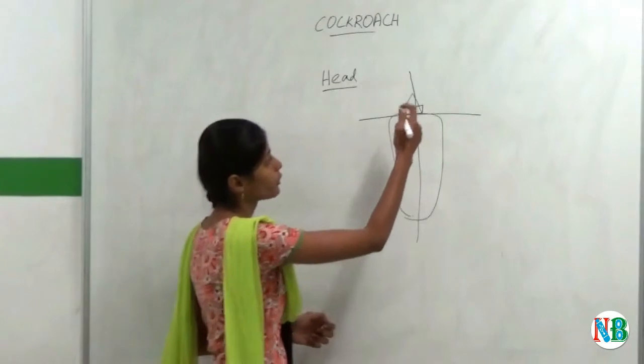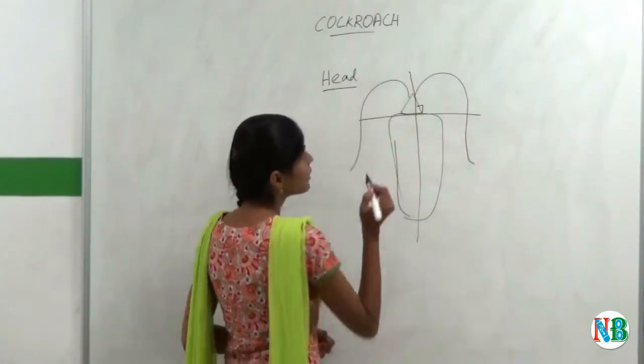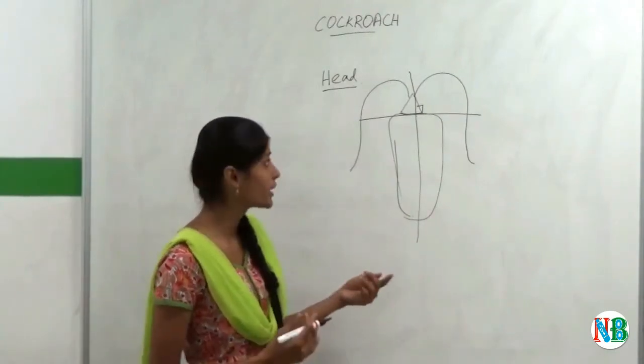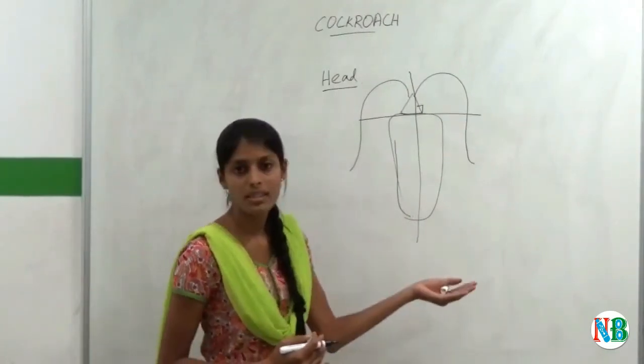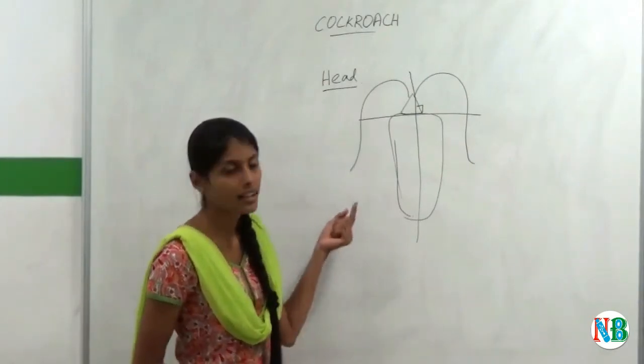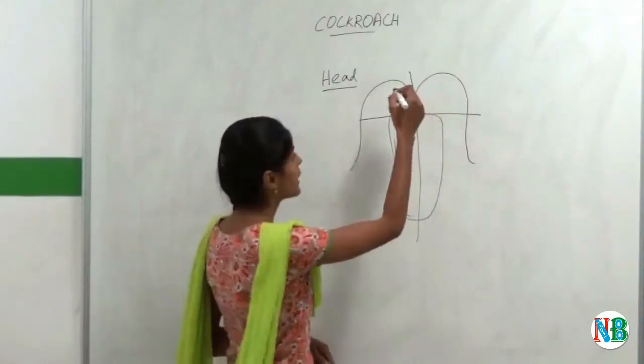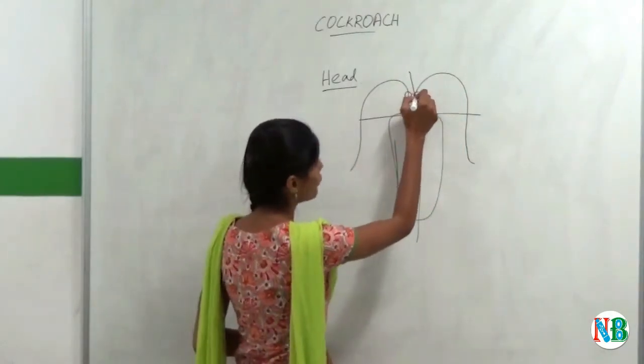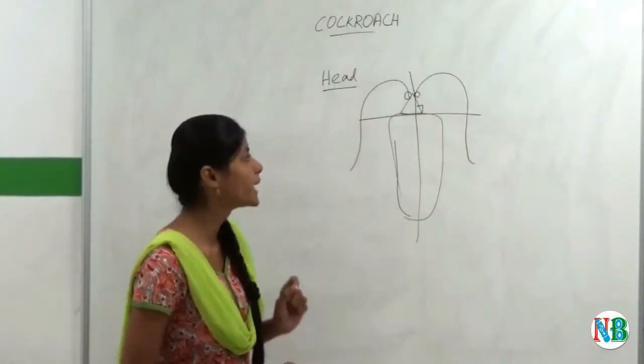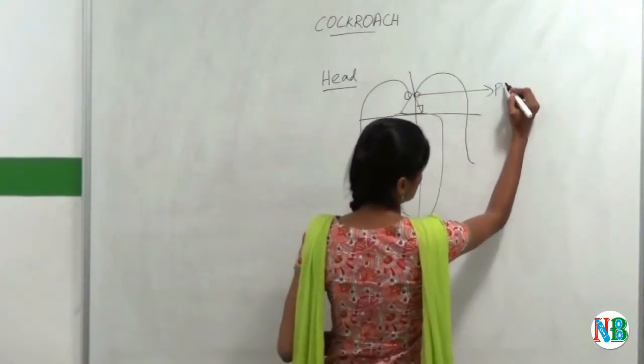And the head of the cockroach also contains two antennae. So the function of this antenna is to communicate with the other insects. And during reproduction, with the help of this antenna, they will detect their mates. And their head also contains two compound eyes. And these eyes consist of specialized units called ommatidia. They help in photoreceptor properties.